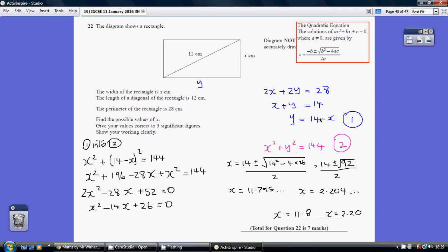So, we've got two equations, two unknowns. So, substituting 1 into 2, we get x squared plus 14 minus x all squared equals 144.